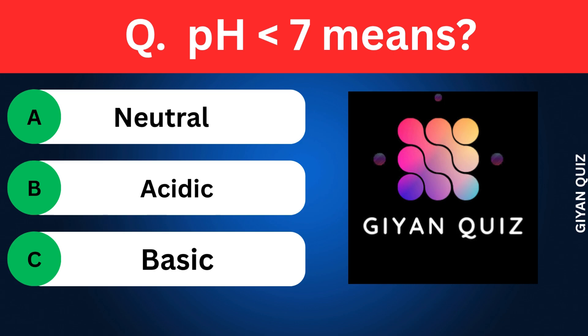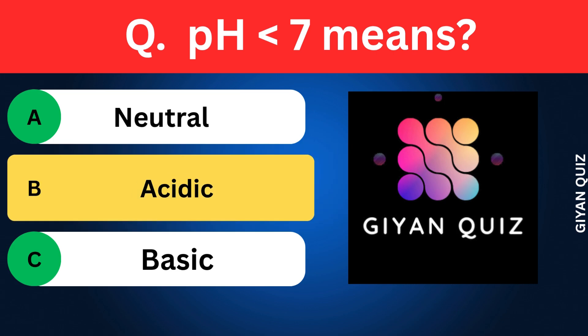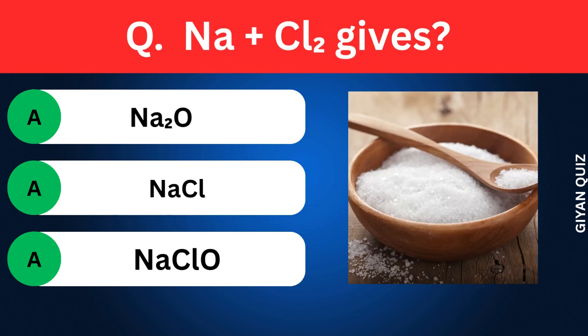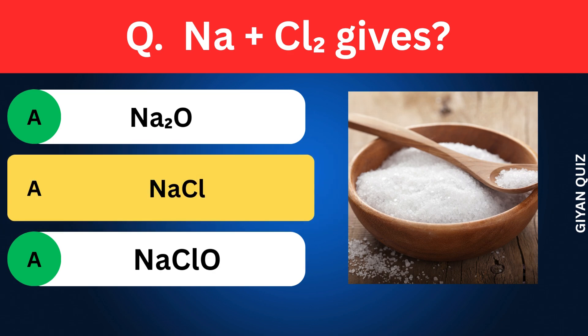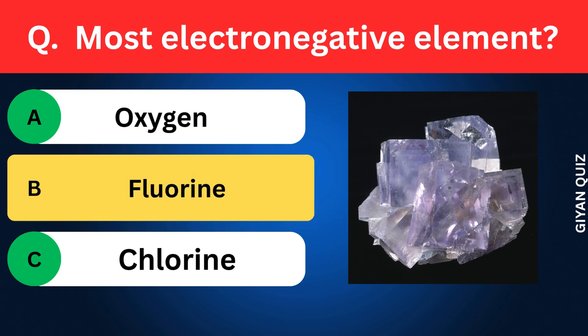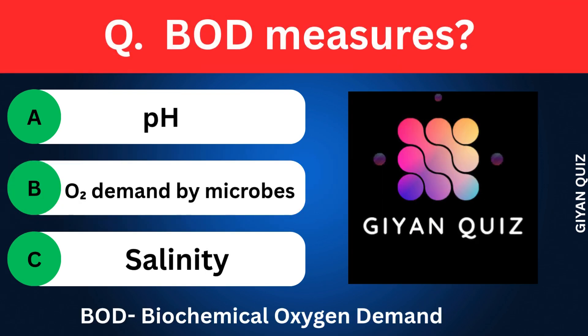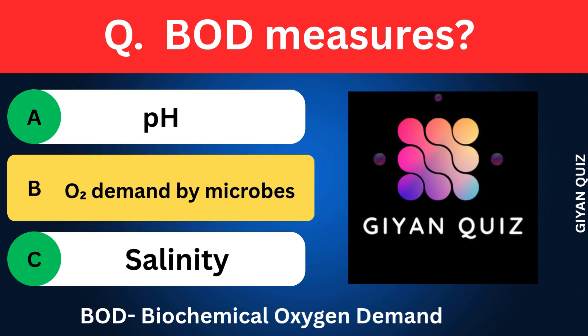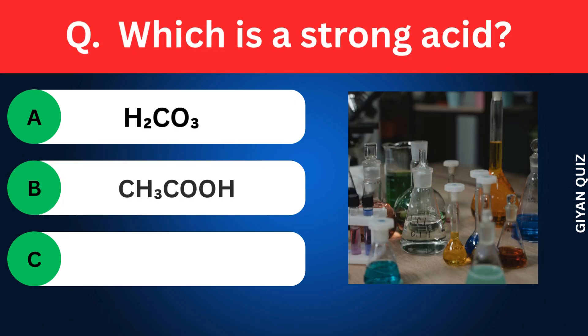pH less than 7 means? Options: Neutral, Acidic, Basic. Correct answer: acidic. Sodium plus chlorine gives? Options: Sodium oxide, Sodium chloride, Sodium hypochlorite. Correct answer: sodium chloride. Most electronegative element? Options: Oxygen, Fluorine, Chlorine. Correct answer: fluorine. BOD measures? Options: pH, Oxygen demand by microbes, Salinity. Correct answer: oxygen demand by microbes.